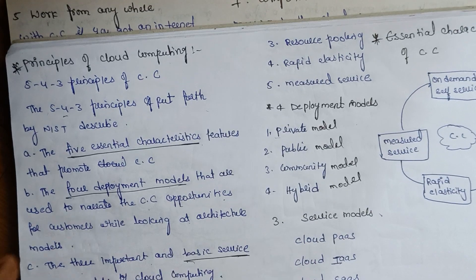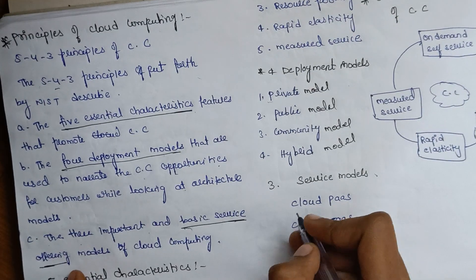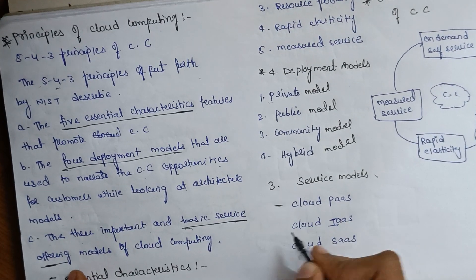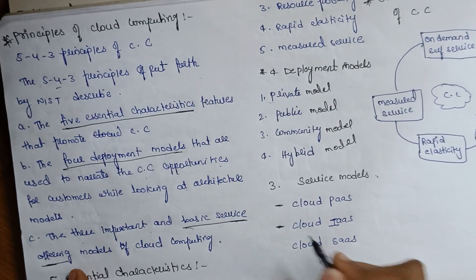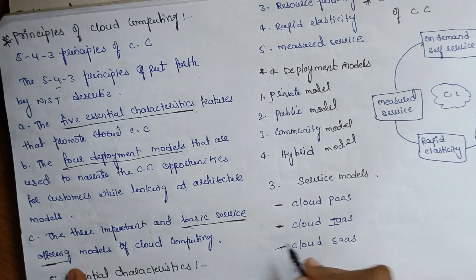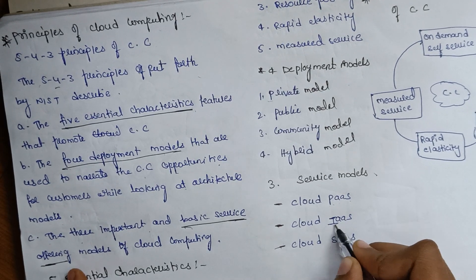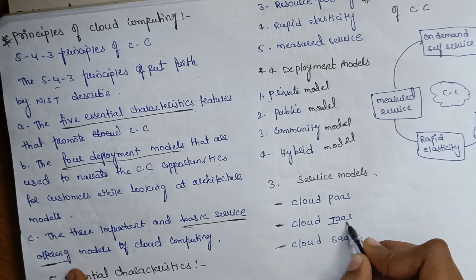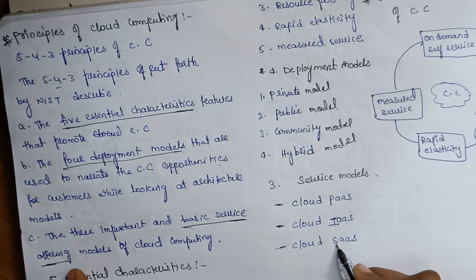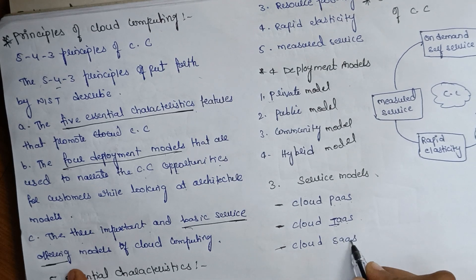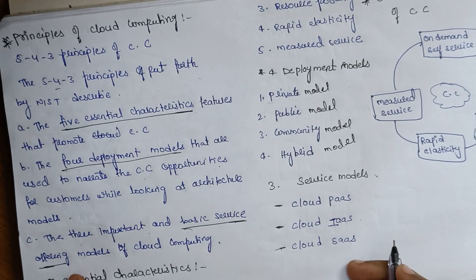The 3 service models are: Cloud PaaS (Platform as a Service), Cloud IaaS (Infrastructure as a Service), and Cloud SaaS (Software as a Service).